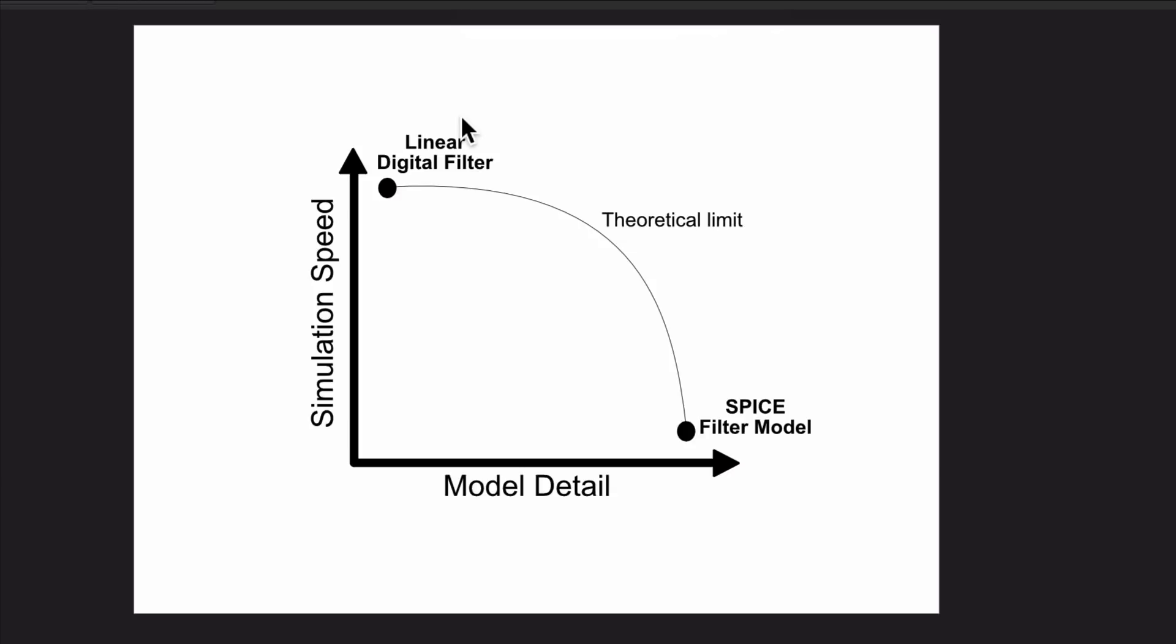So for every model that I make, I start somewhere here. I have a very detailed model that does not run very fast, and then I start trying to get that detailed model up, so make it faster but without losing too much detail. And in principle there's a theoretical limit here which is called the Pareto front.